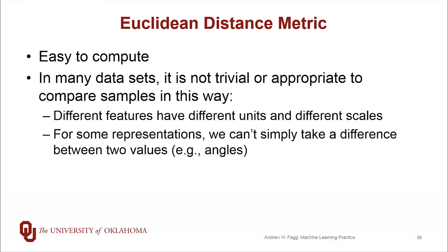For other scenarios, it's not trivial to simply take a difference between two values. So for example, if I have two angles, taking the difference between the values that represent those angles doesn't give us the full picture. So what is the difference between one degree and 359 degrees? Is it 358 degrees or is it two degrees? The Euclidean distance metric would say 358. So we need some ways to deal with different kinds of distance metrics.